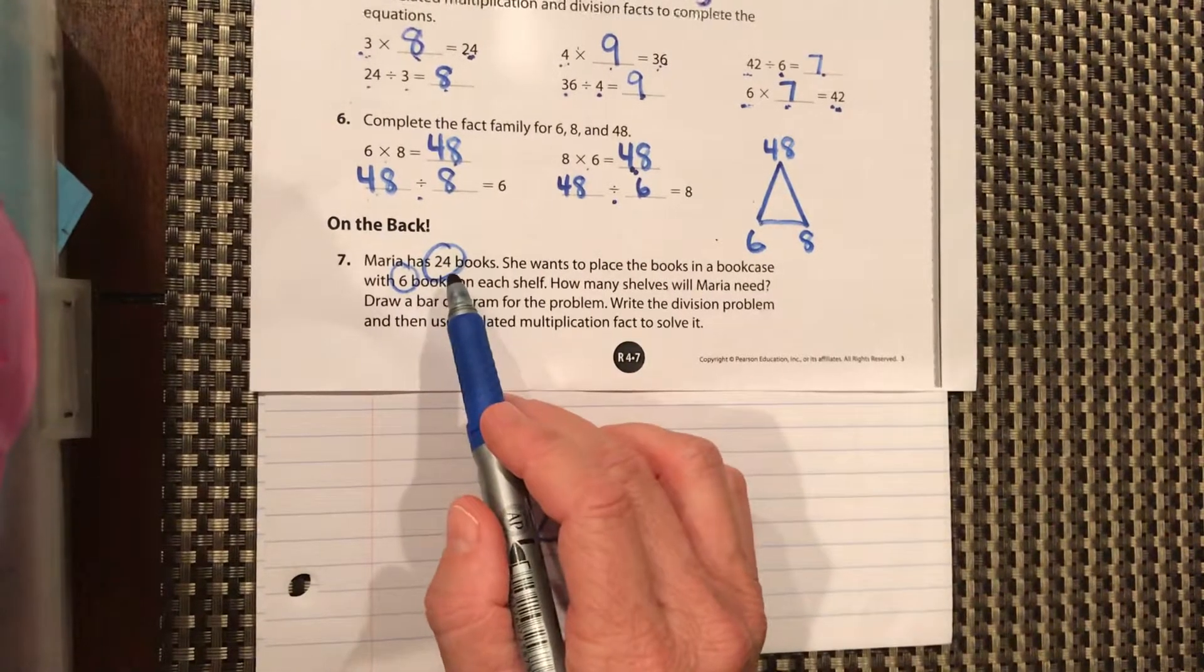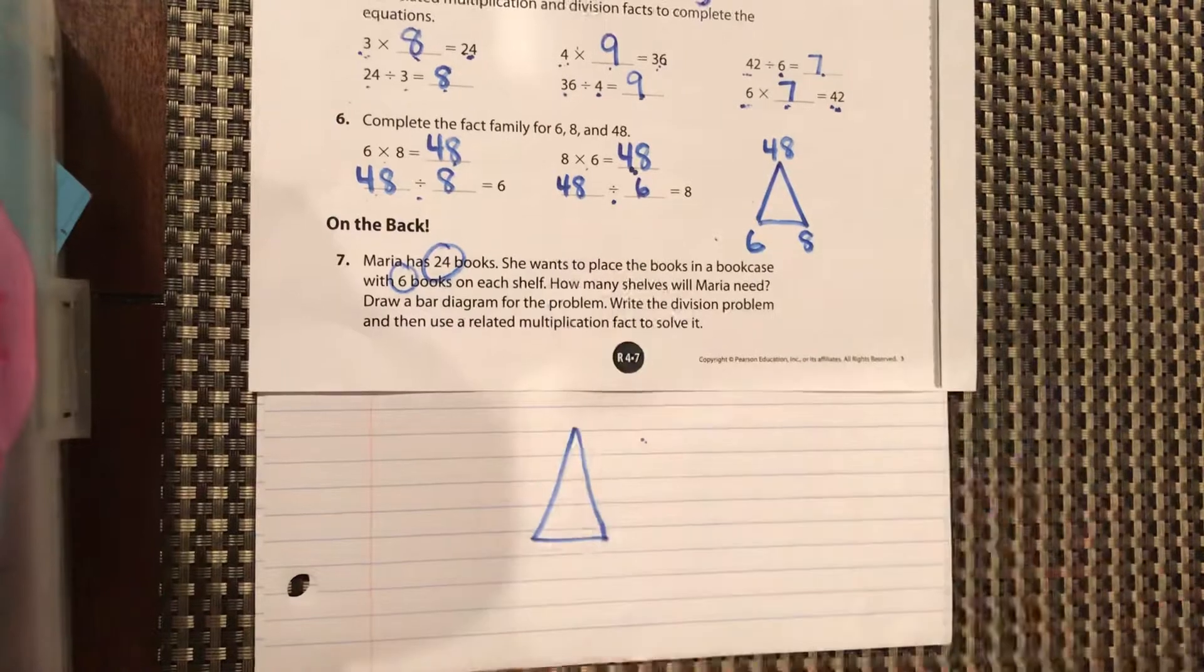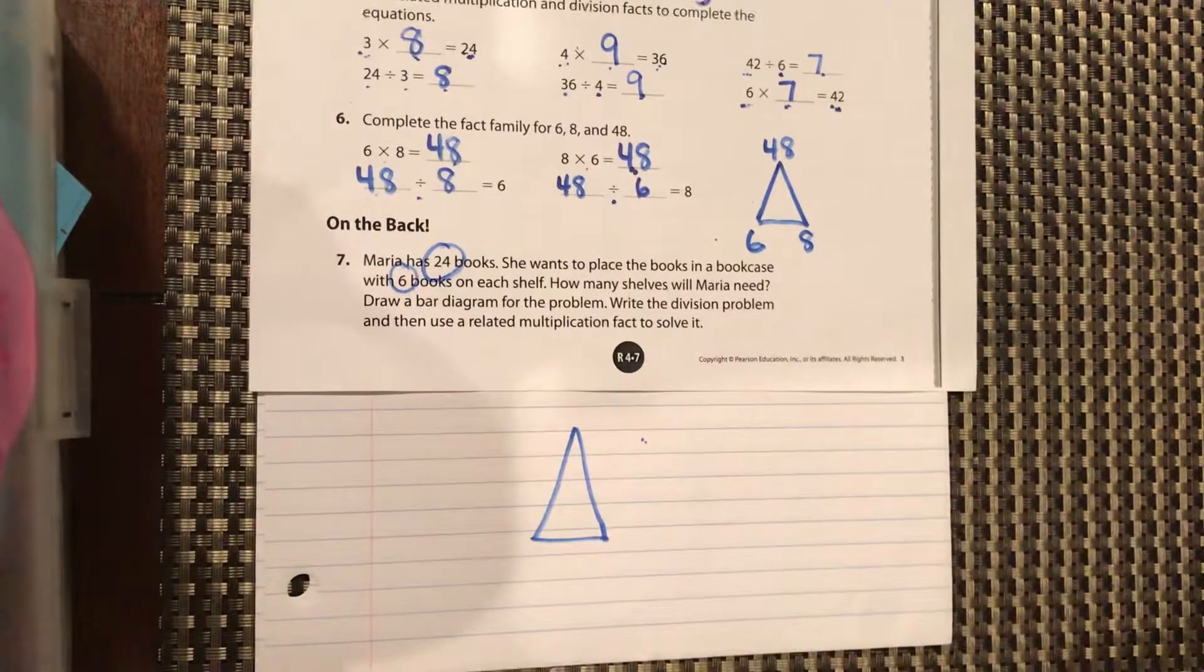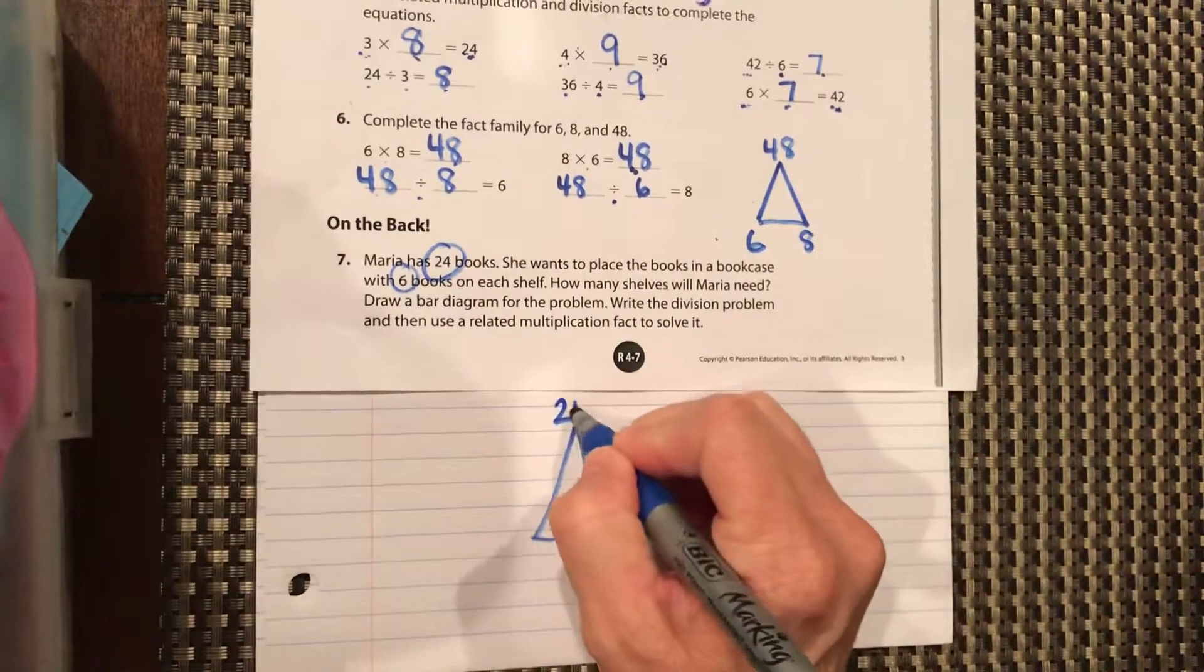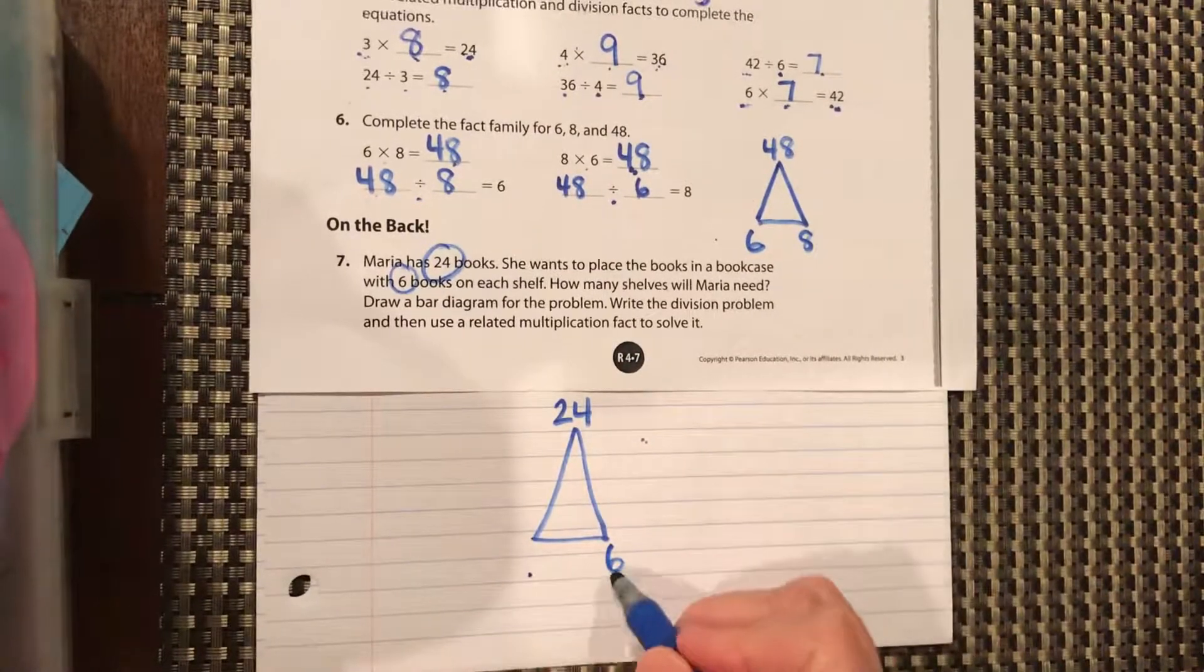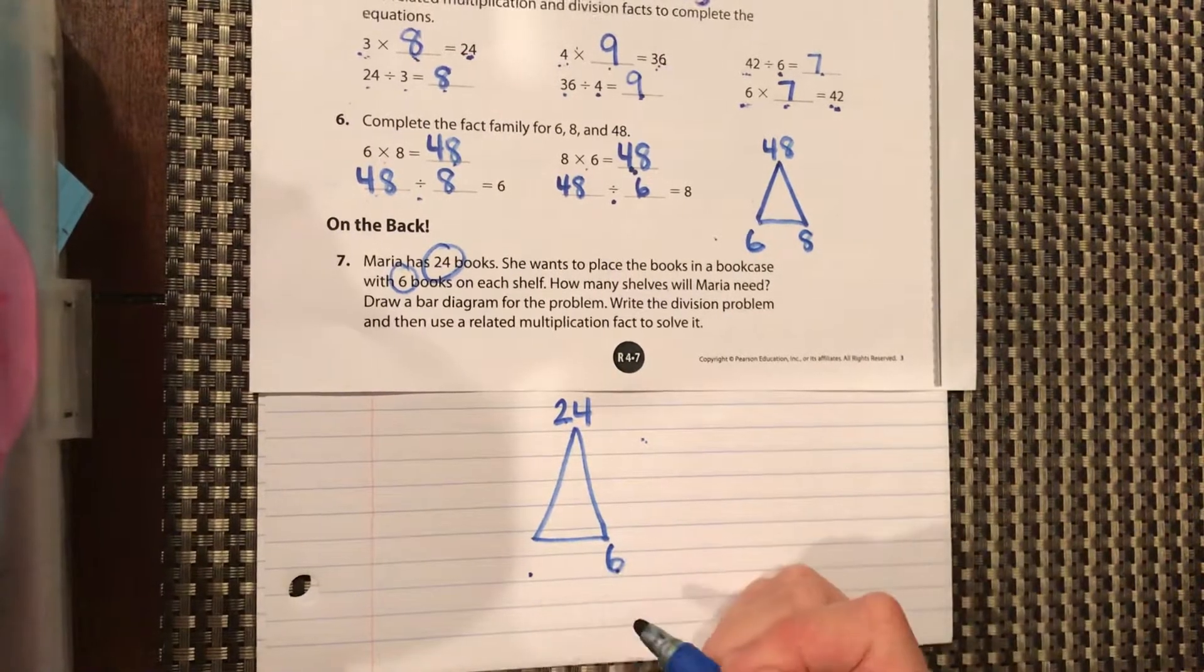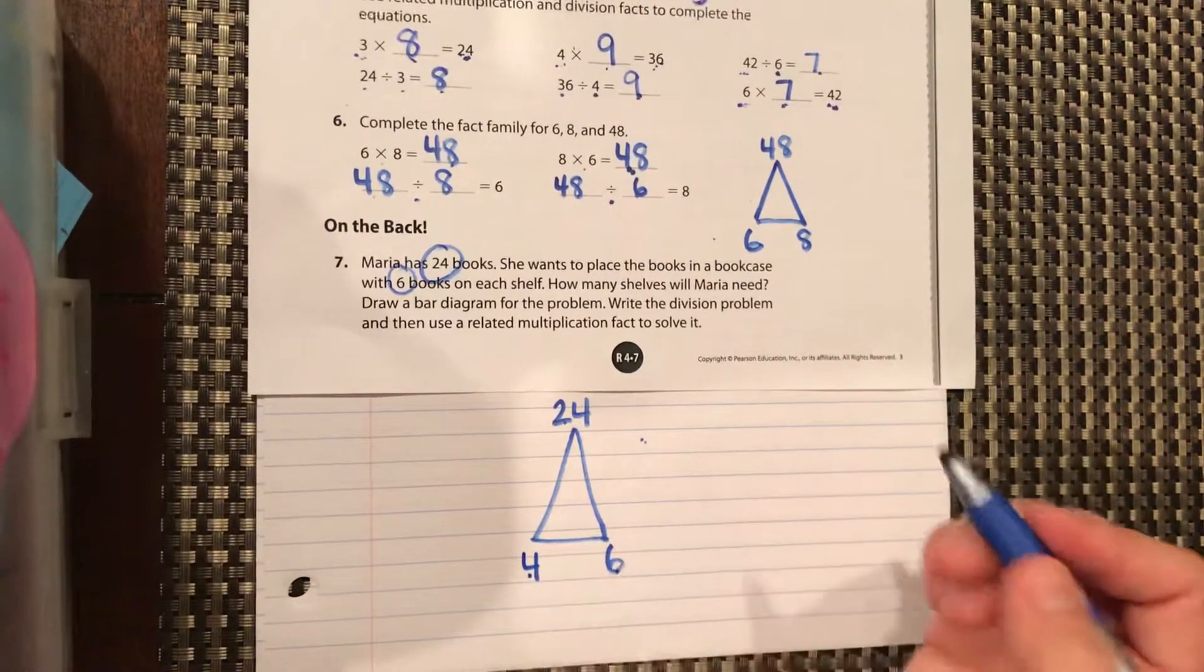Well, she's not going to need more than 24. Even if she put one book on each shelf, she's not going to need more than 24, but she's going to put six of those on a shelf. So our largest number, our total here, is 24. We have six. So we want to know what times six equals 24. And that should be four.